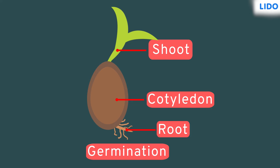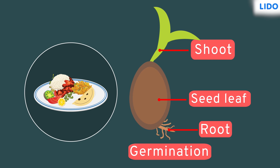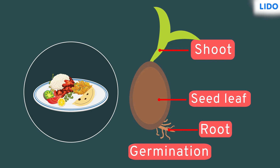The cotyledon is also called a seed leaf. It stores food for the embryo. This food is used by the baby plant until it grows its first green leaves.